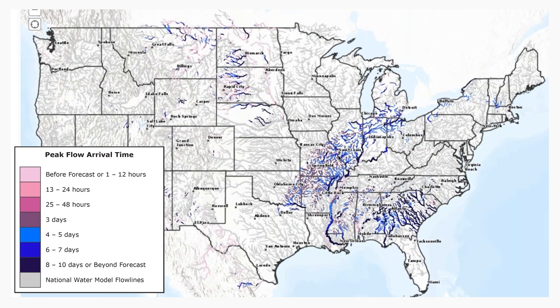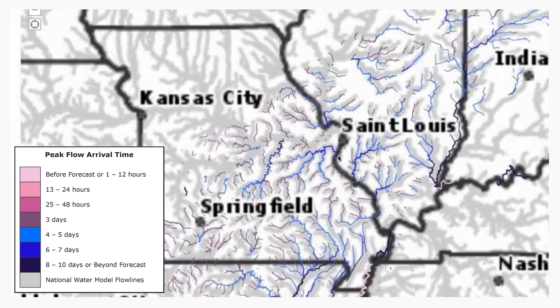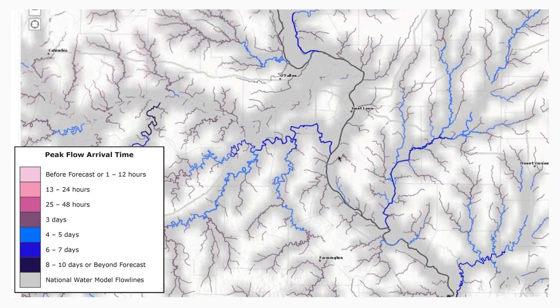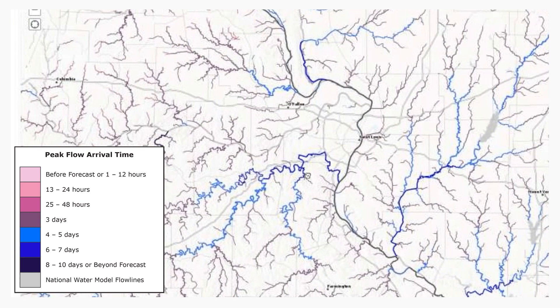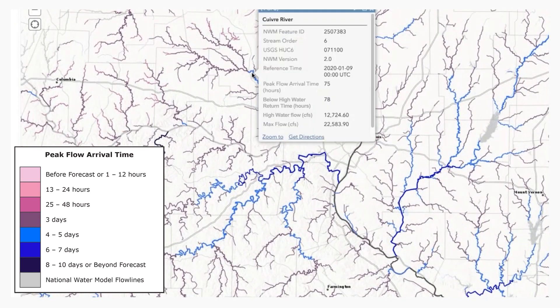Clicking a stream reach reveals timing details that can be very useful for decision support messaging. Also available are the high water flow threshold value and the maximum flow during the forecast period. Details about the peak flow arrival time promote the National Weather Service's vital decision support mission.